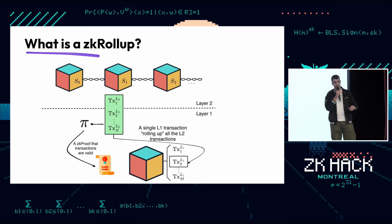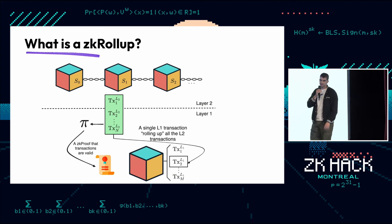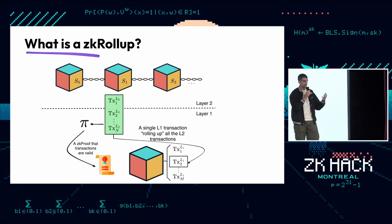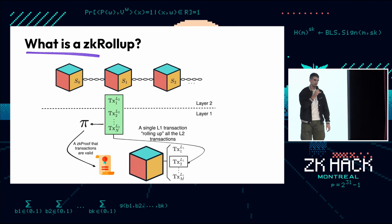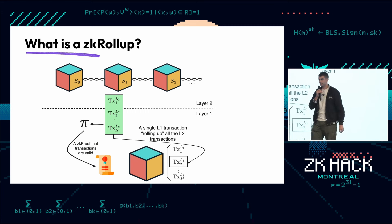When we group transactions in a batch, we generate a proof of the validity of those transactions. Layer 1 is called the validity layer because this proof is verified on a smart contract on layer 1. So users send transactions to layer 2 and the proof gets verified on layer 1.